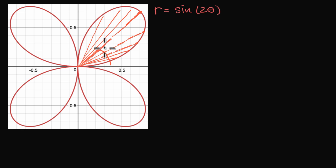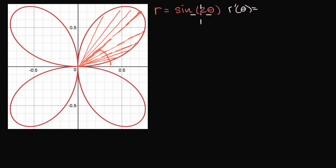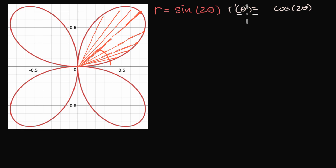Now we're going to do this in a calculus context. The first question might be: how do we express the rate of change of r with respect to theta? What is r prime of theta? Well, there's really nothing new here — you just have one variable as a function of another, and you use the chain rule. The derivative of sine of two theta with respect to two theta is cosine of two theta, and then you multiply by the derivative of two theta with respect to theta, which is two. So r prime of theta equals two cosine of two theta.